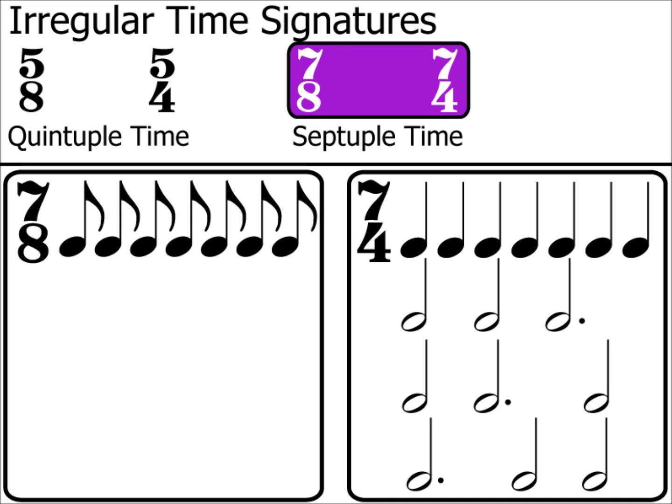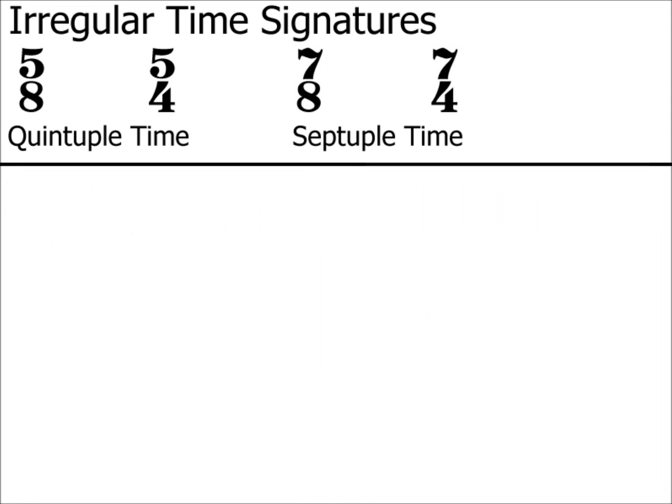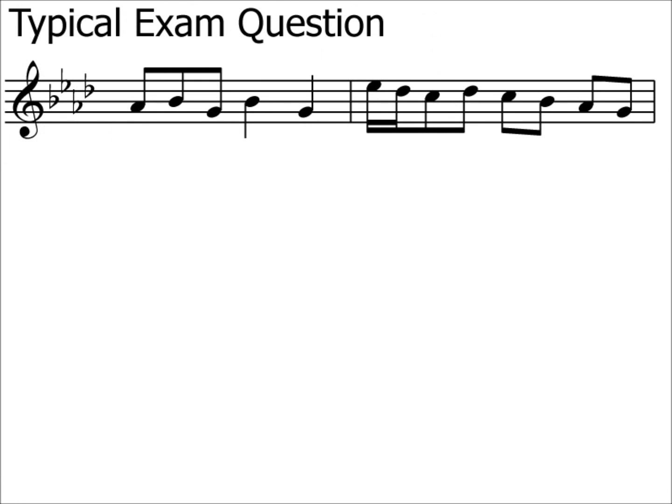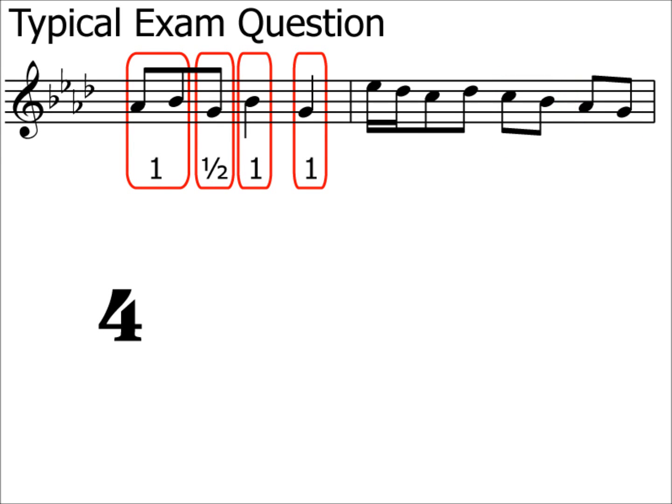Before we finish, let's have a quick look at a typical question you might come across in a music theory exam. Your job is to select the correct time signature. The first thing to notice is that bar 1 starts with a group of three quavers, and bar 2 ends with two groups of two quavers. As there is a mix of groupings of twos and threes, we're clearly dealing with an irregular time signature. If we counted in crotchets — assuming the time signature has a 4 at the bottom — bar 1 has a value of 3 and a half. Therefore, we're clearly not supposed to be counting in crotchets, because the top number has to be a whole number.